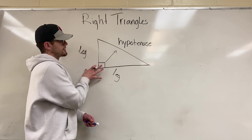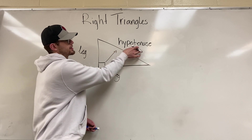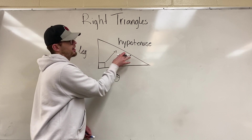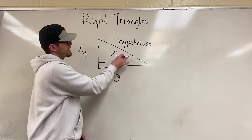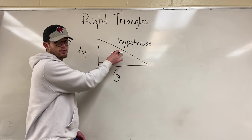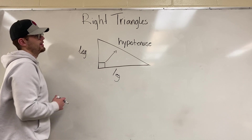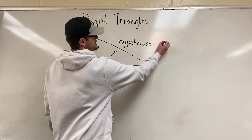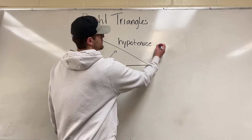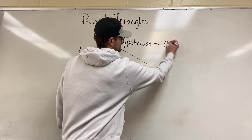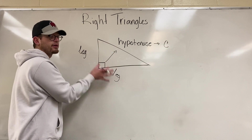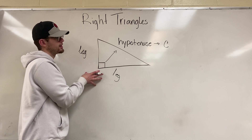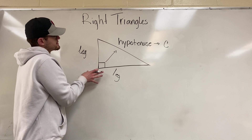Really important vocabulary: these are called legs, and all right triangles have a hypotenuse. The hypotenuse is the longest side of a right triangle and is directly opposite the right angle. The hypotenuse will always be given the letter c. The two legs are interchangeable and will be labeled a and b.